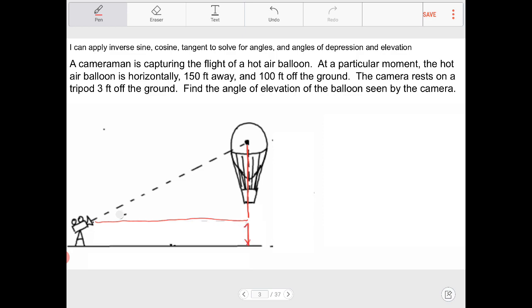Hopefully you guys had some time to think about this. This height over here is 3. And since the hot air balloon is 100 feet off the ground and 150 feet away, this is going to be 150. And then this length over here is going to be 97.